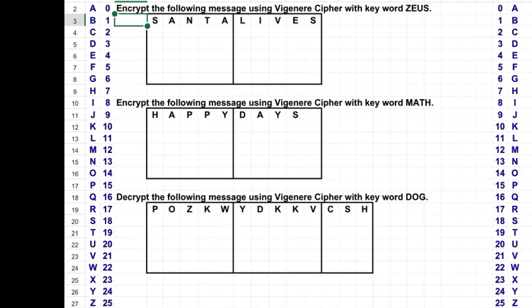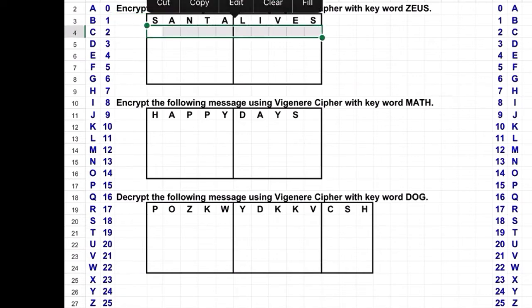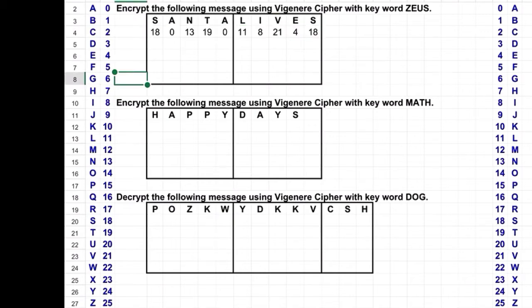Vigenère ciphers. To encrypt a message using a Vigenère cipher, the first thing we do, as we've done before, is look up the codes for each one of the letters in the message that we want to encrypt.